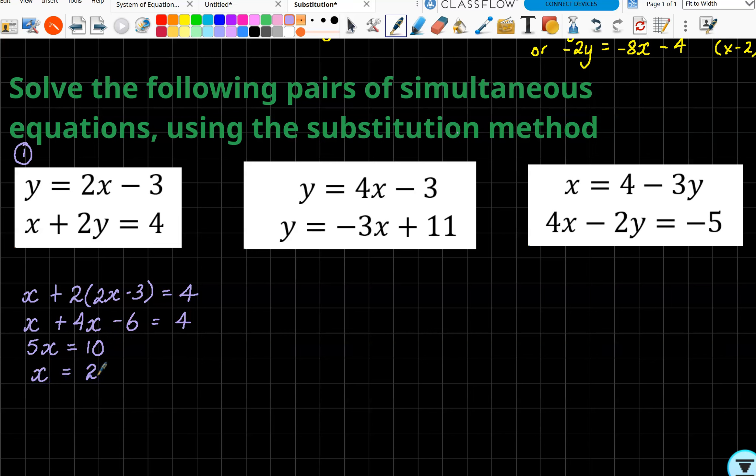Now you haven't finished because we do want our y value. You could sub it into either one of these equations, but clearly the one that says y equals is going to be the easiest option. So y = 2 times—what is our x value? Well, we've said it's 2—so 2 times 2 - 3, so 4 - 3 is 1. So if this was two graphs, we're saying that they intersect at (2, 1).